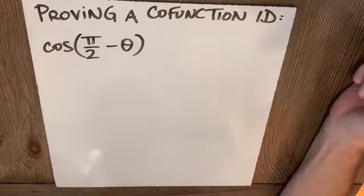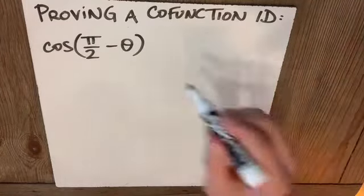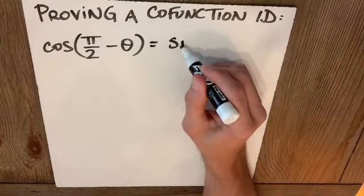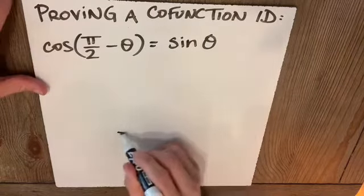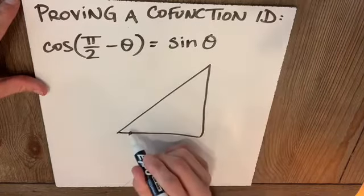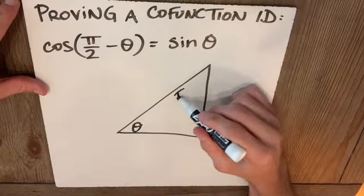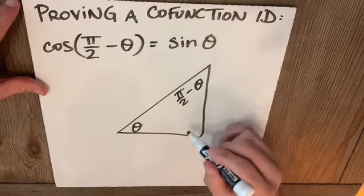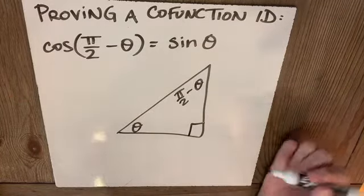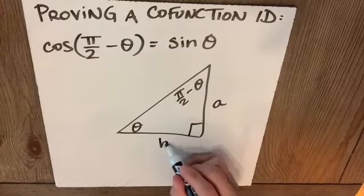Remember our co-function identities. Cosine of π/2 minus θ was equal to sine of θ. And remember where that came from. If this is θ, then this is π/2 minus θ, and here is our right angle.